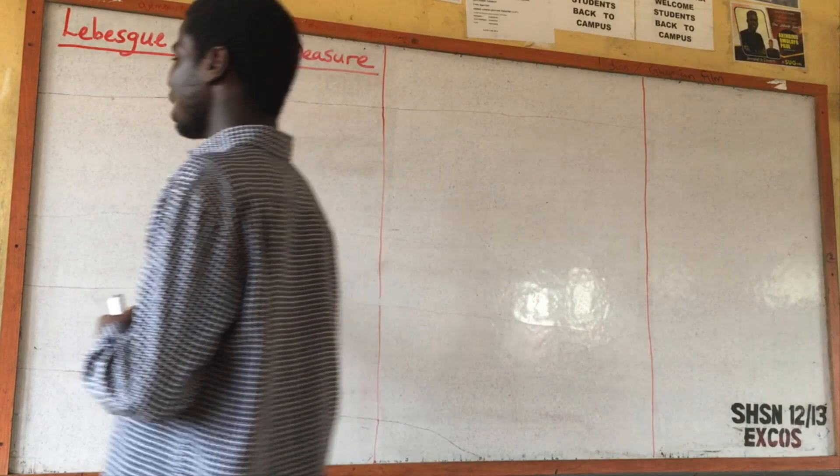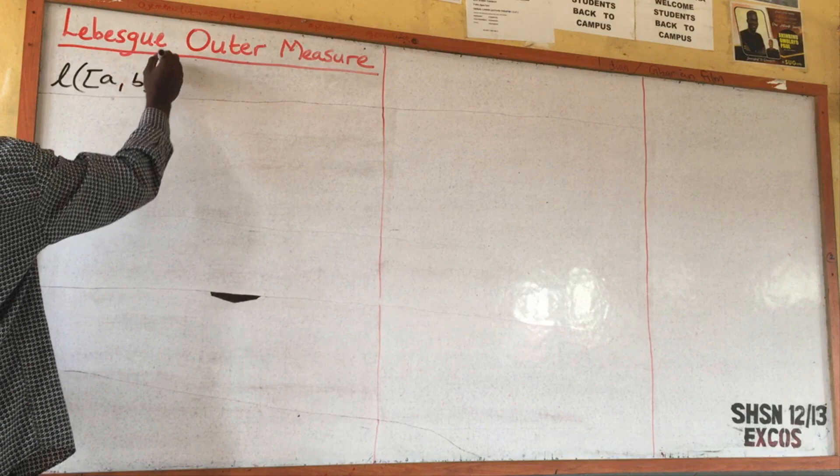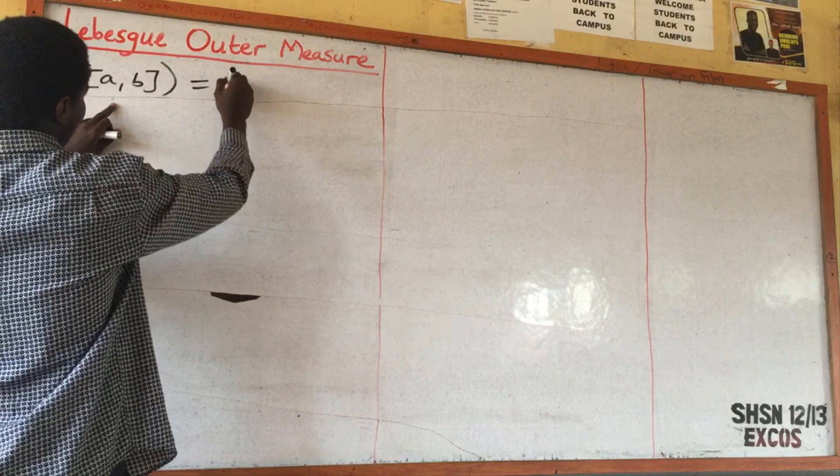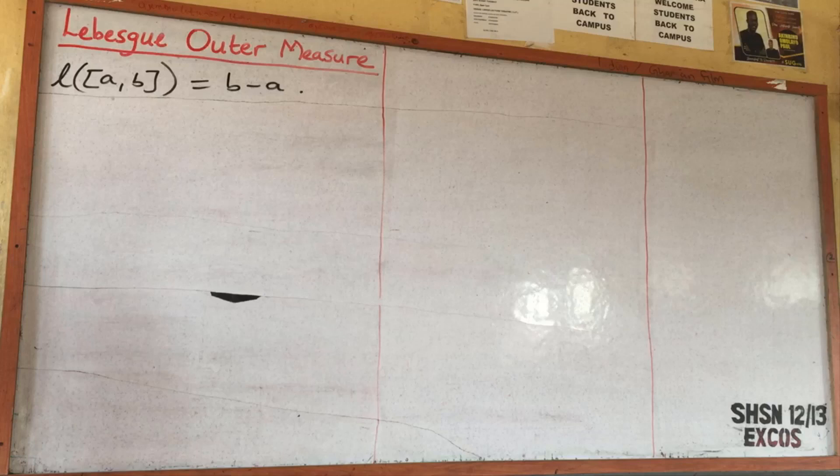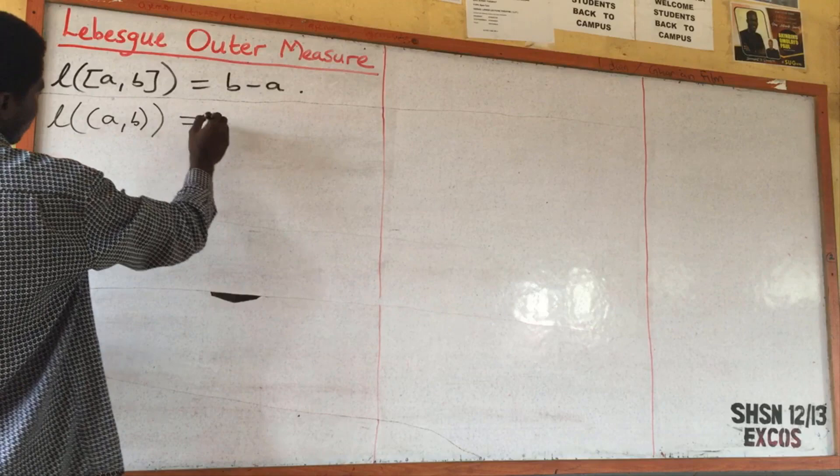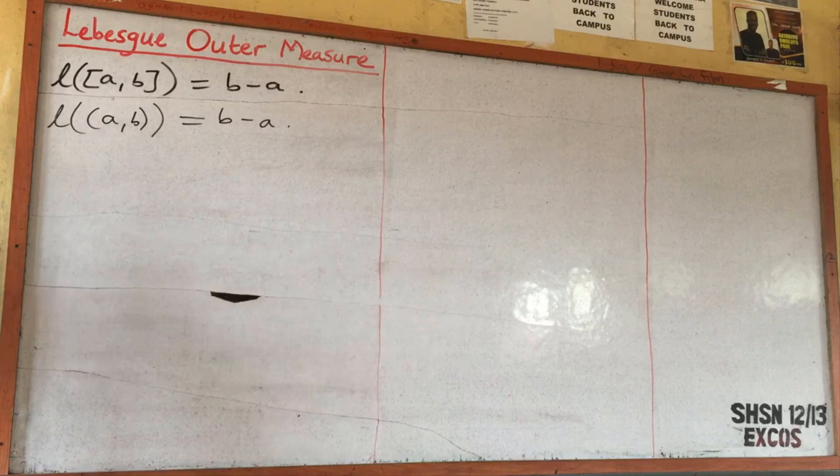The first thing is the concept of length. Length is denoted as L. The length of a closed interval [a, b] is equal to b minus a. Even if you are given an open interval, the length of an open interval like (a, b) is also b minus a.